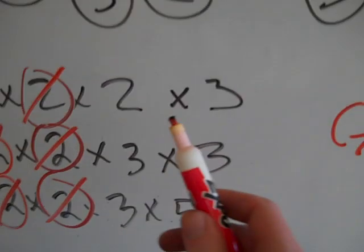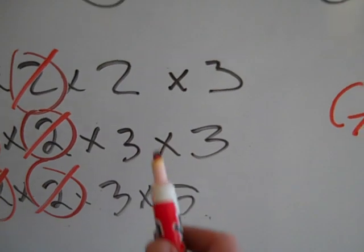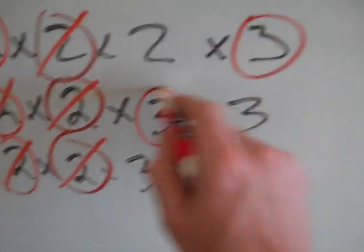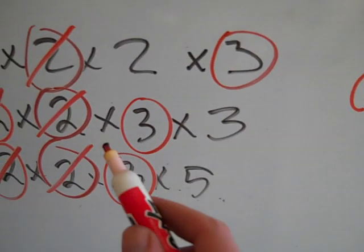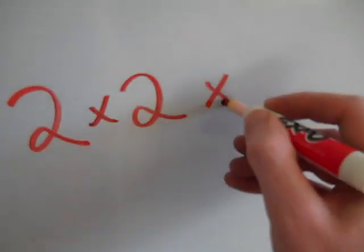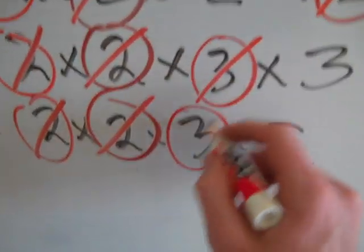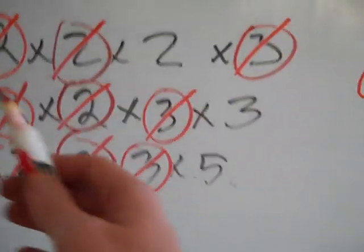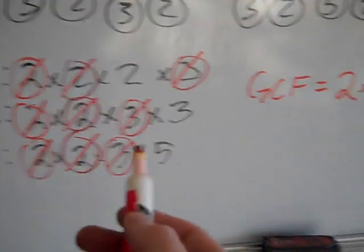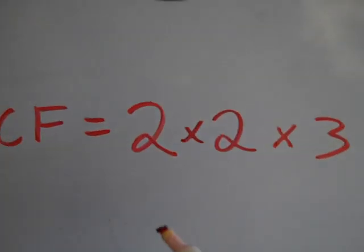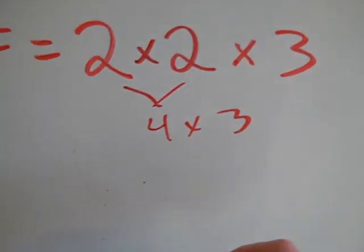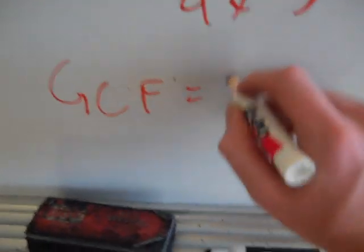If I look at the numbers left, this one has another 2, but the other two don't. This one has a 5. But they all have a 3 — at least one 3. This one has two 3's, but that doesn't matter. They all have one 3, so the GCF is going to have a 3 in it, and I can cross those off. The numbers left are 2, 3, and 5 — they don't have any other common prime factors. So I take all the prime factors that matched: 2, 2, and 3, and multiply those together. That's 4 times 3, so that's 12. The GCF equals 12.